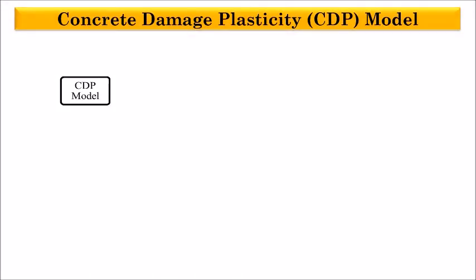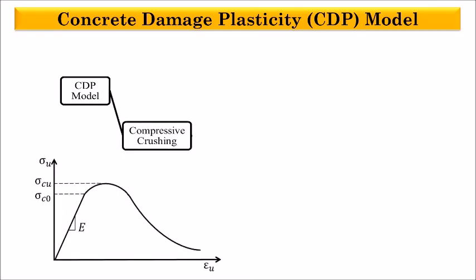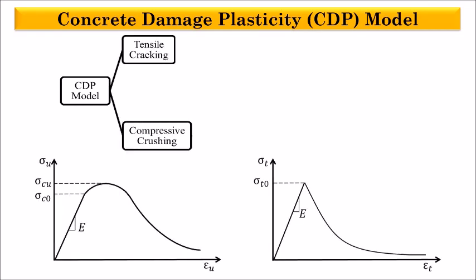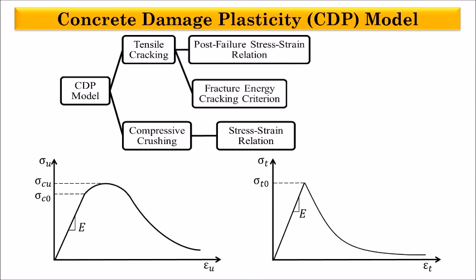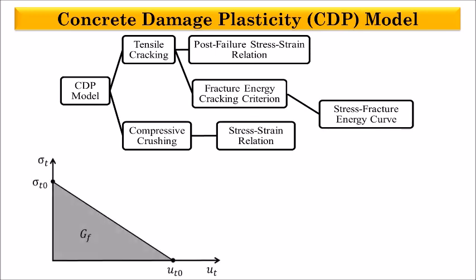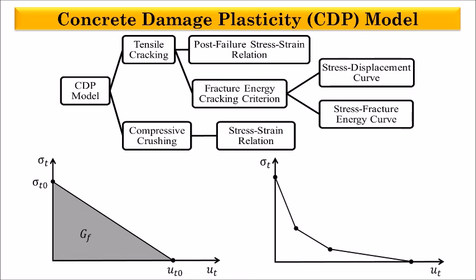The CDP model assumes that the main two failure mechanisms are compressive crushing and tensile cracking. Compressive crushing can be described by a stress-strain relation. However, the tensile cracking should be defined either through a post-failure stress-strain relation, which for large unreinforced areas will lead to unreasonable mesh sensitivity, or through fracture energy cracking criterion. This criterion can be invoked by either providing the value for fracture energy or by inputting the values for stress and displacement directly, and we chose the latter to avoid excessive stiffness.